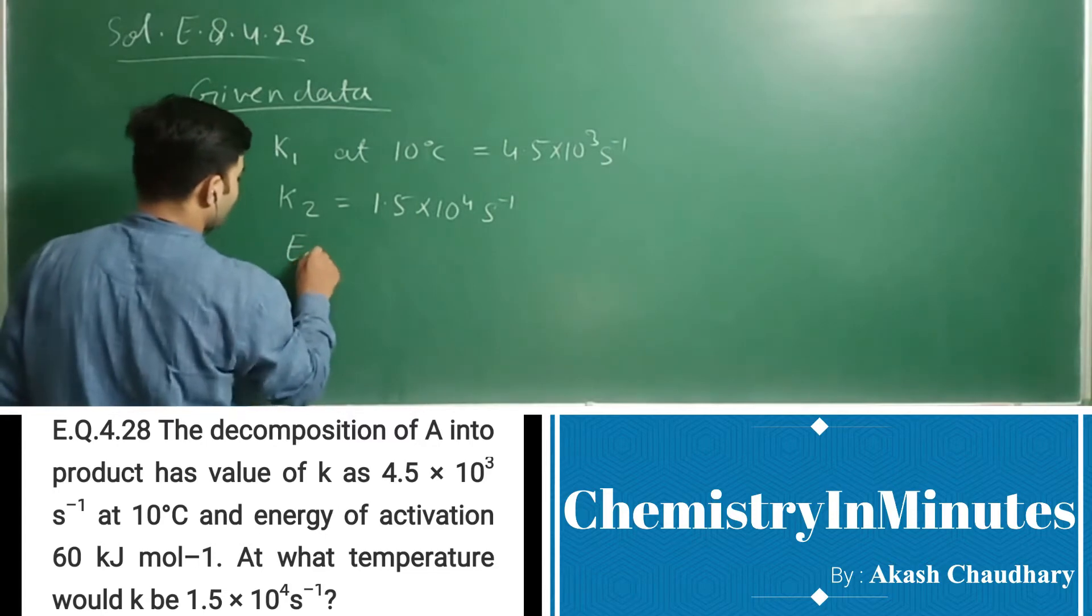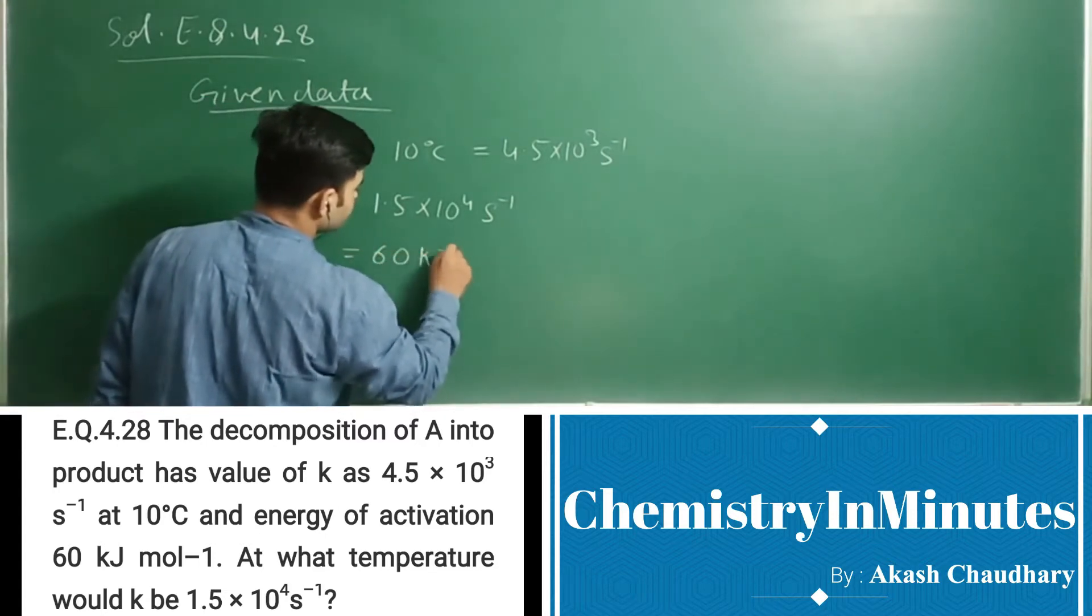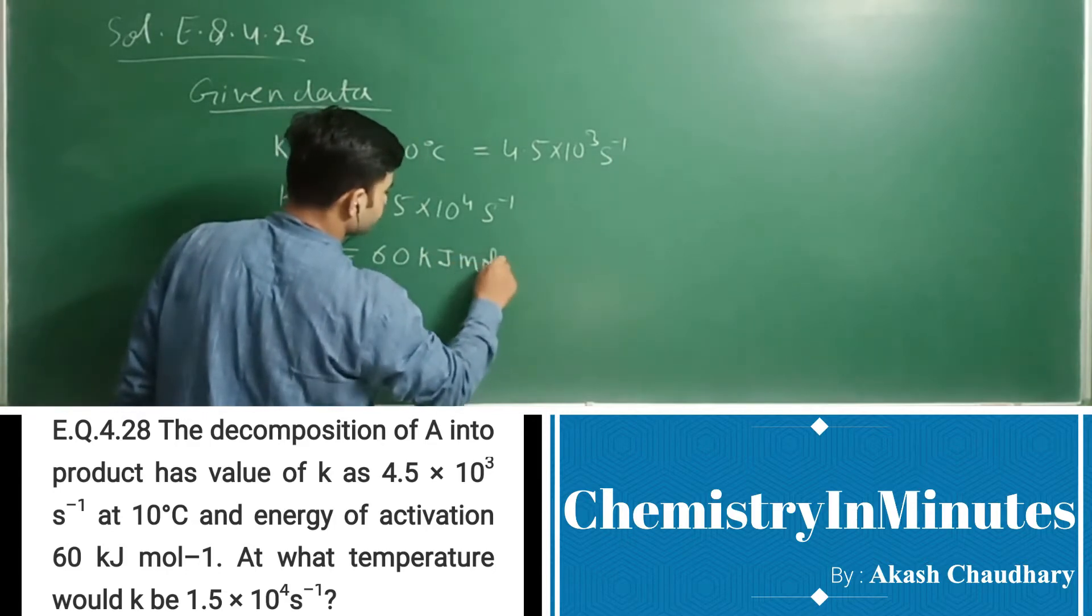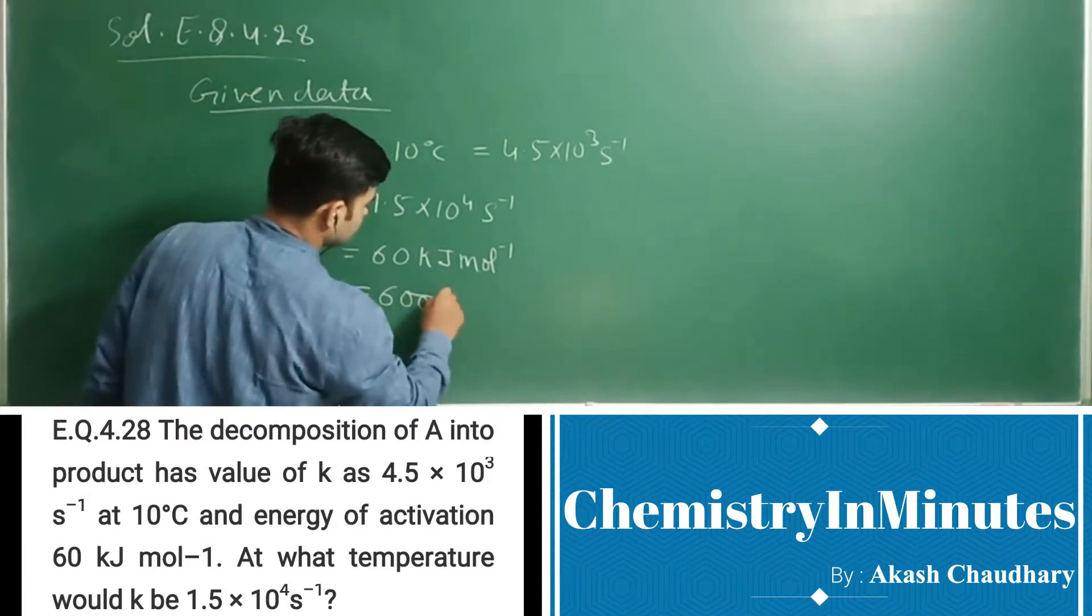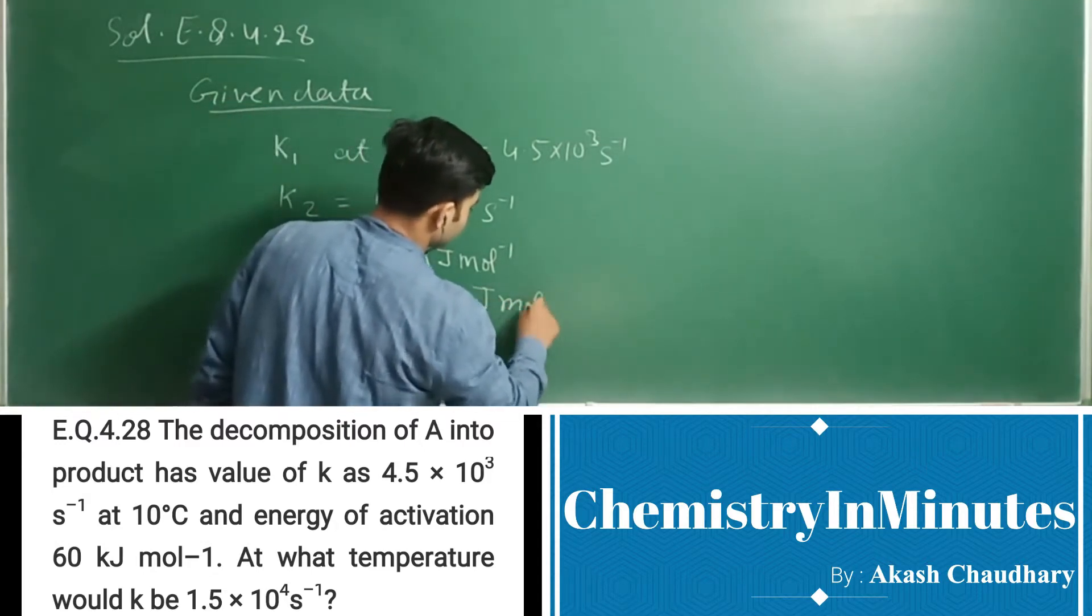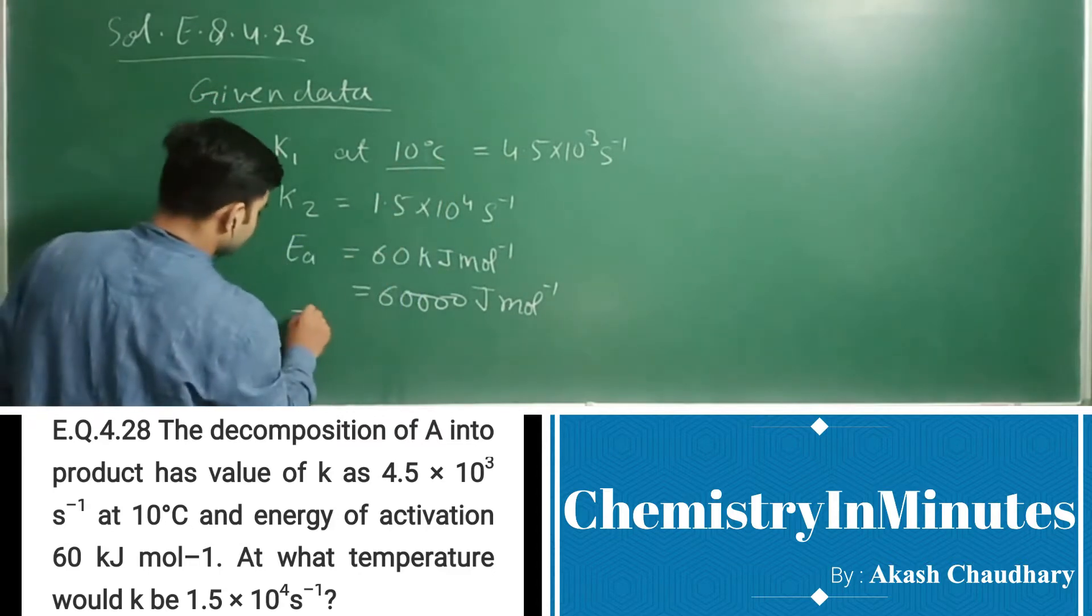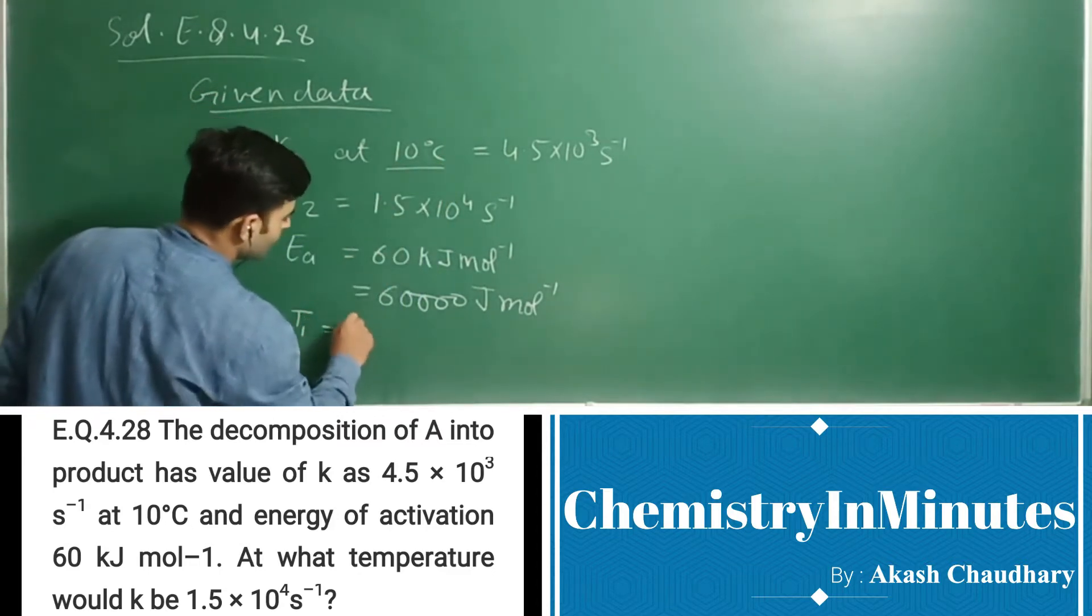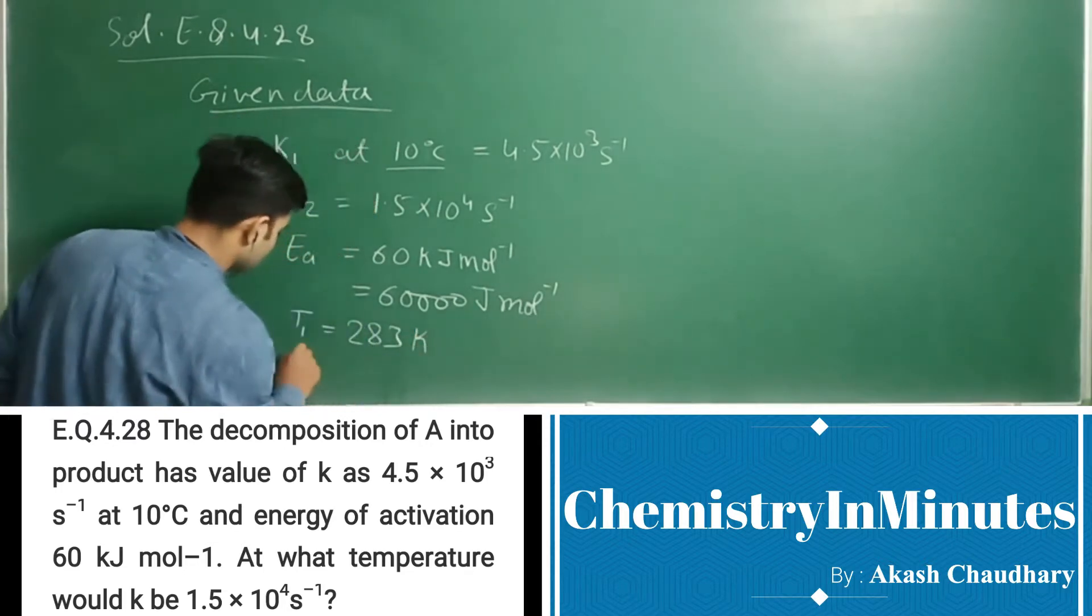Ea, activation energy, is 60 kJ/mol. This can be written as 60,000 J/mol. Now from here, T1 we can write 283 K, and T2 we have to find.